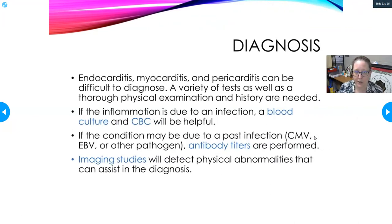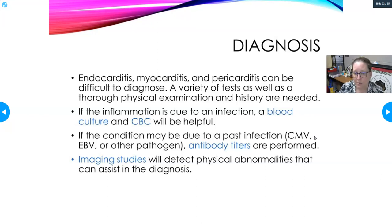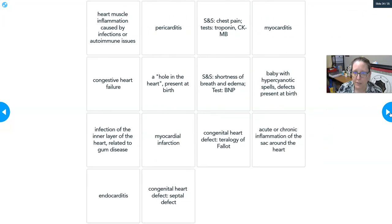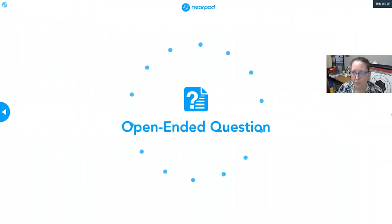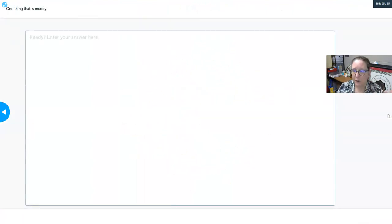Endocarditis, myocarditis, and pericarditis can all be difficult to diagnose, requiring a variety of tests as well as a thorough physical exam and history. If inflammation is due to infection, blood cultures and a CBC are helpful. Antibody testing for certain infections — such as CMV or Epstein-Barr — can help if the condition may be due to a past infection. Imaging studies can also detect physical abnormalities, fluid accumulation, or swelling of the heart wall. If you have any questions, feel free to ask in Nearpod or drop them below if you're on YouTube — thank you for your attention.